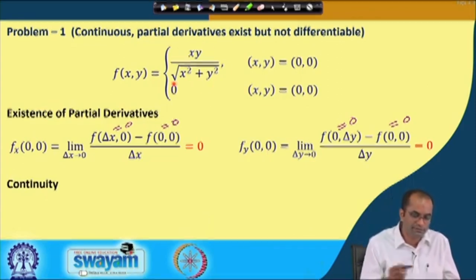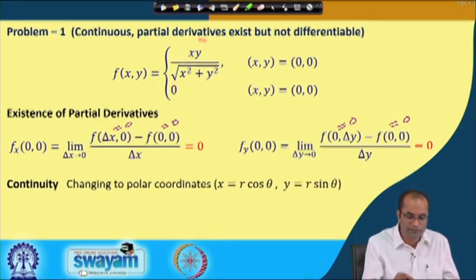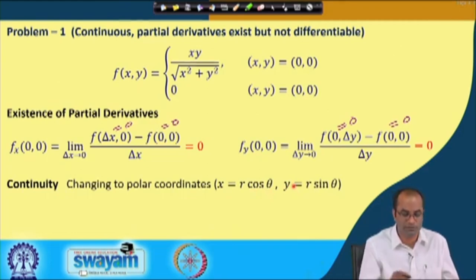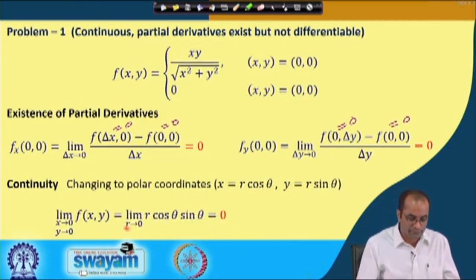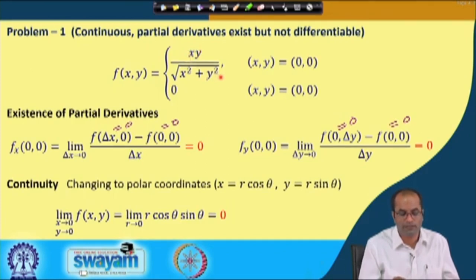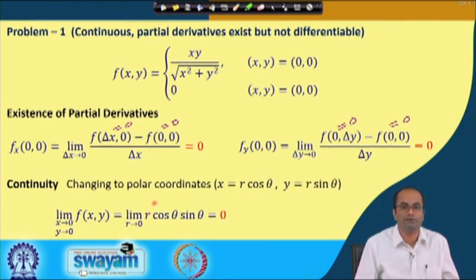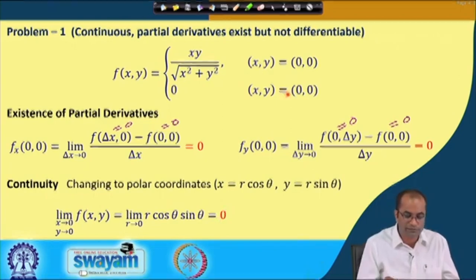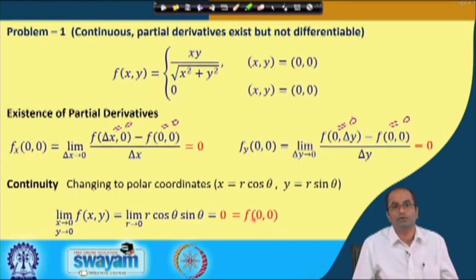For continuity, we change to polar coordinates: x = r cos θ, y = r sin θ, and take the limit as r → 0. Substituting gives r² / sqrt(r²) = r times cos θ · sin θ. As r → 0, since cos θ and sin θ are bounded, this limit goes to 0. Since the function value at (0,0) is also 0, the function is continuous at the origin.